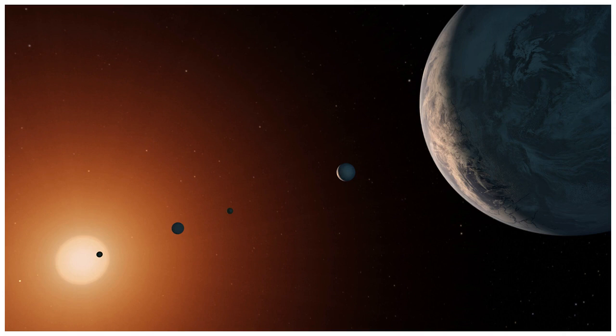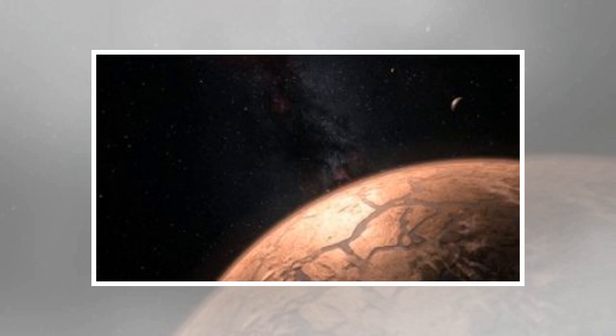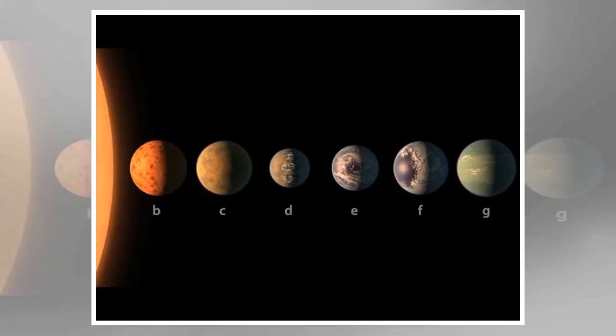The first study sought to refine our understanding of how the star at the center of the system behaves, while the second pursued more precise measurements of each planet's radius. The third looked at the planet's masses, and the fourth observed their atmospheres.